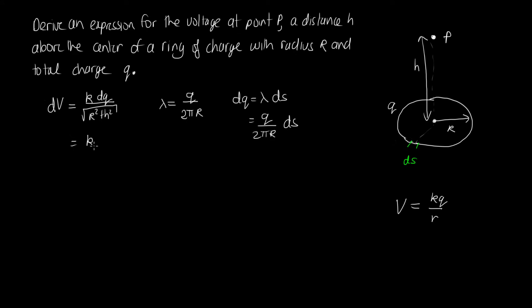So we've got k times q dS, and then over 2πR times the square root of R² + h². So this tells us how much this little increment here contributes to the voltage up here.